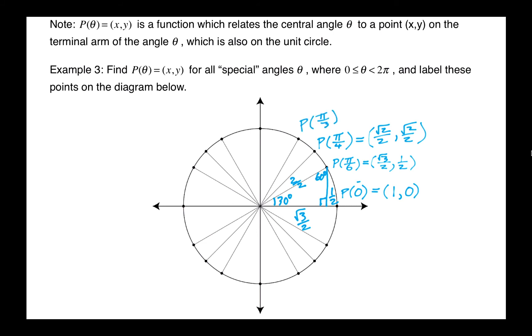And for a 60 degree angle, pi over 3, you're going to find that the x and y coordinates are switched compared to what we had right here.